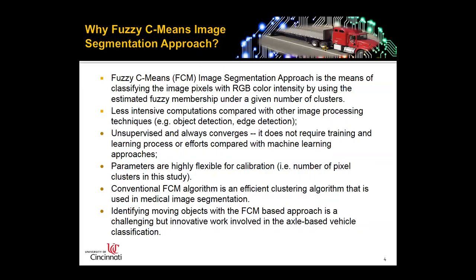A conventional FCM algorithm is an efficient clustering algorithm usually used in medical image segmentation, typically focused on static objects. But for transportation applications, identifying moving objects — that is, vehicles on the highway — with an FCM-based approach is actually challenging but innovative work involving axle-based vehicle classification.